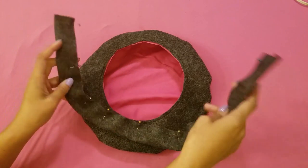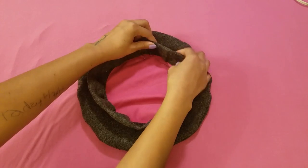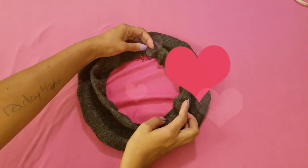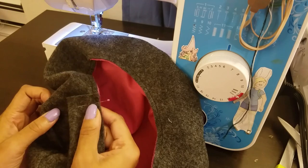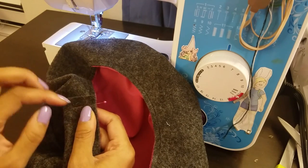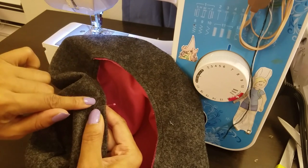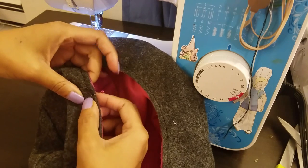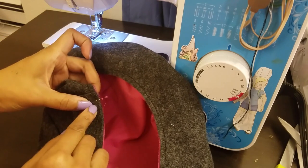Now sew your strip onto the edge of your hat using a 1/5 inch seam allowance. Whether you are sewing this by hand or with a sewing machine, this will be the same, but you are not going to sew starting at the edge of the strip. You are going to go in about a half an inch and start sewing there.